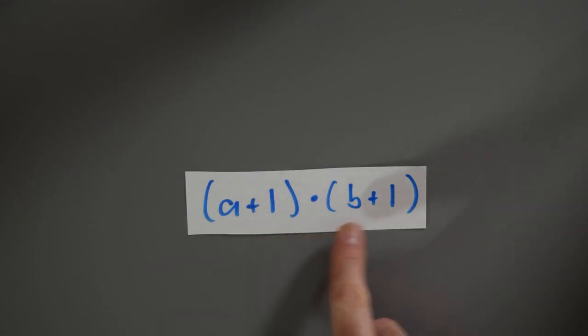We'll take a look at (a+1)·(b+1). We'll do this in two different ways, using left and right distributivity.